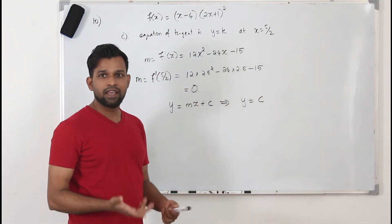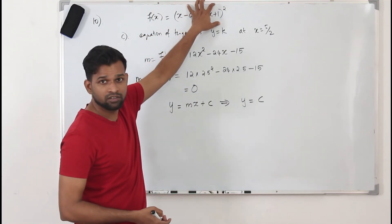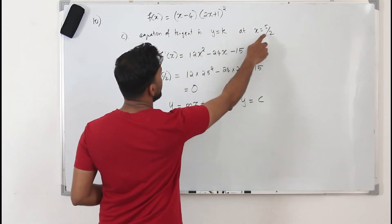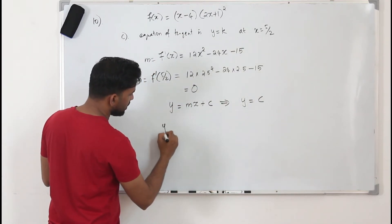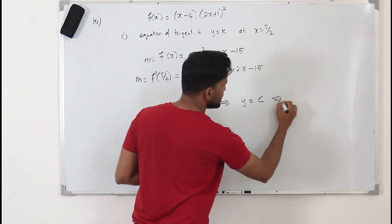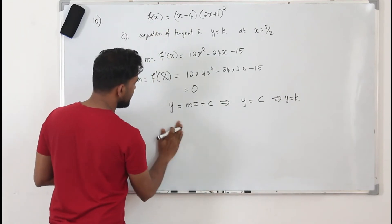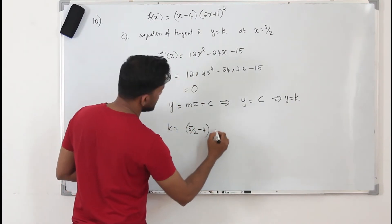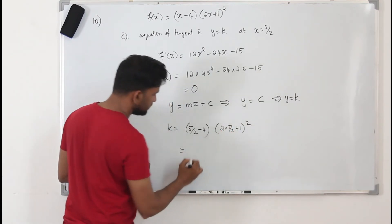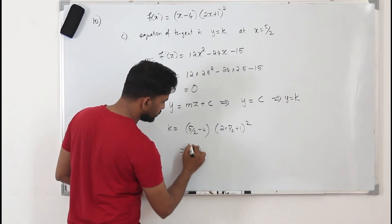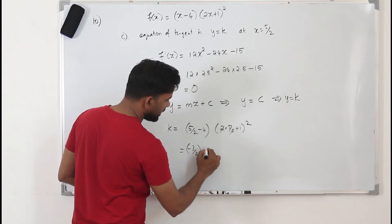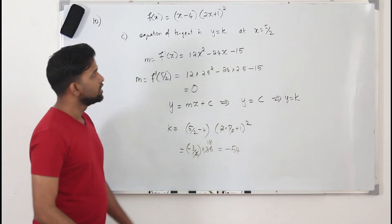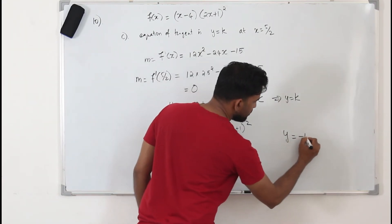To find k, substitute x equals 5/2 into f of x. So we compute (5/2 − 4) times (2 times 5/2 plus 1) squared. This gives (5/2 − 4) times (5 + 1)², which is (−3/2) times 36. Simplifying: minus 54. So the equation of the tangent is y equals minus 54.